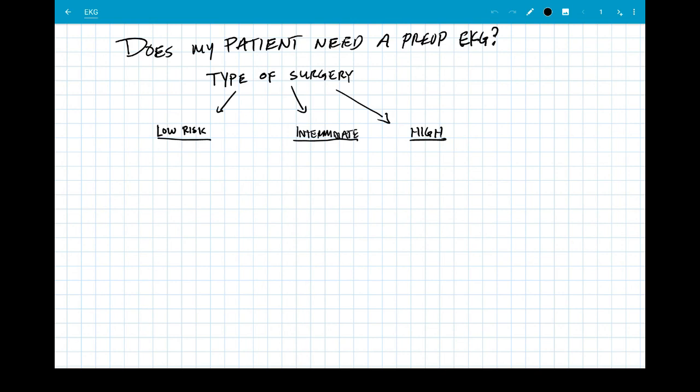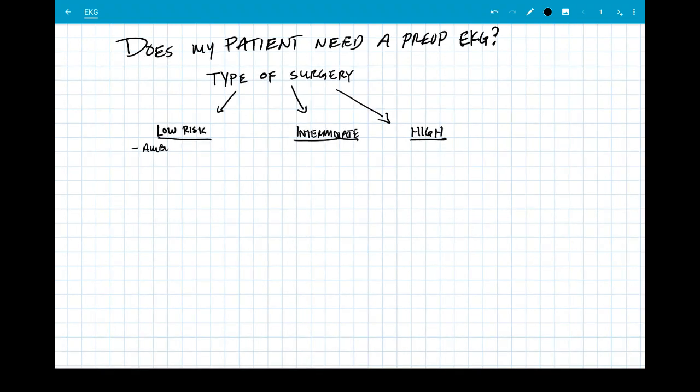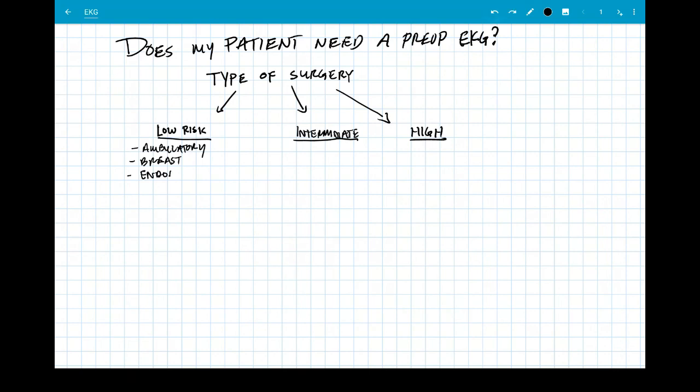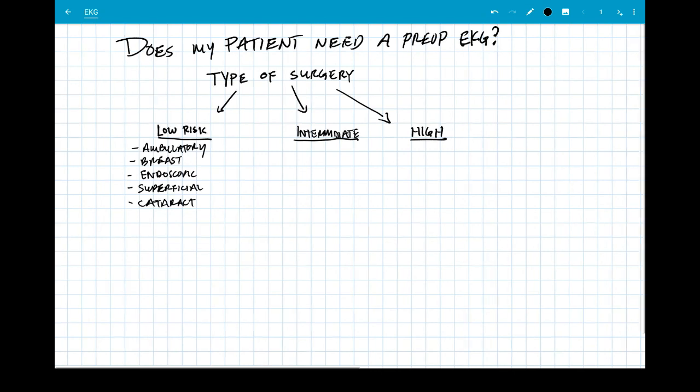Low-risk surgery is going to be things like ambulatory surgery, breast, endoscopic, anything superficial, or cataract surgery. If this is a low-risk surgery, no EKG is indicated. I'm going to put a little asterisk here, though, and we'll talk about why a little bit later.